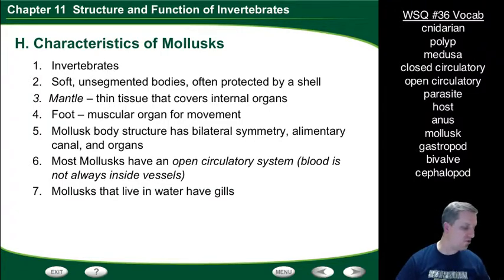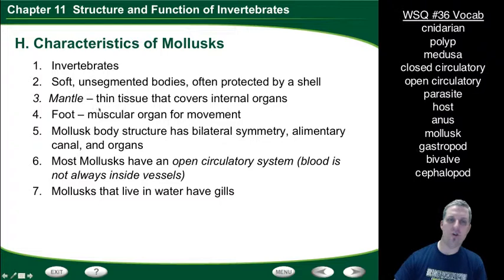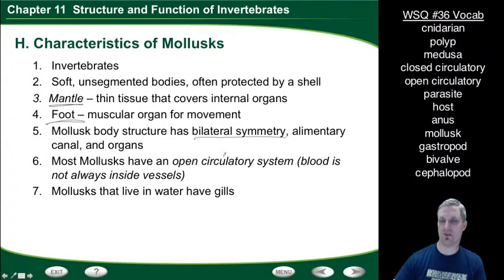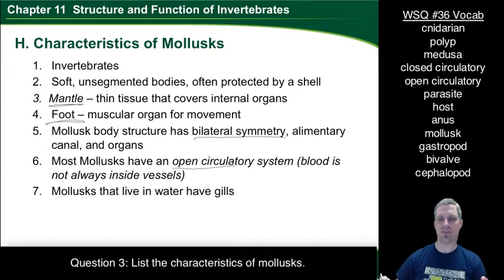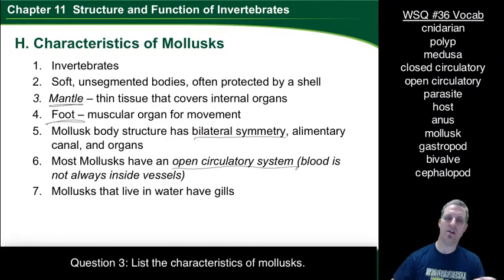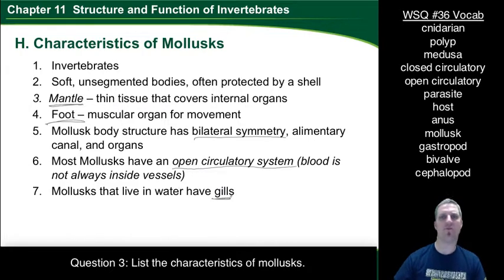The last group is mollusks. Mollusks are invertebrates with soft, unsegmented bodies often protected by a shell. All mollusks have a mantle — a thin tissue that covers their internal organs and often produces the shell. They all have a foot, which is a muscular organ used for movement. Mollusks have bilateral symmetry, an alimentary canal, and organs. Most mollusks have an open circulatory system, where blood is not always inside vessels but is pumped out over the organs to deliver nutrients and oxygen, then pooled back to the heart.